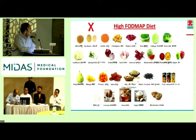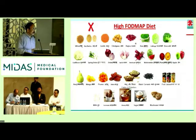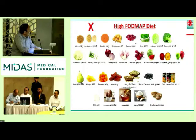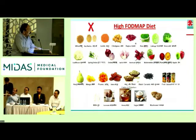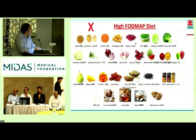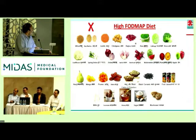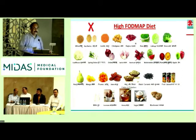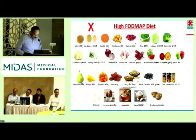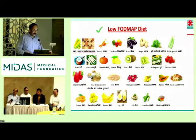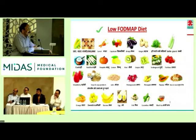What you should not eat: mango, watermelon, apple, pear — these are fruits you should not eat. You should not be eating milk, ice cream, honey, sugar — all very tempting things. You should not be eating cabbage, broccoli, onion, garlic, cashews, and raisins. This is all high FODMAP diet you should not eat. And what you should eat is all the rest — you can always eat those.